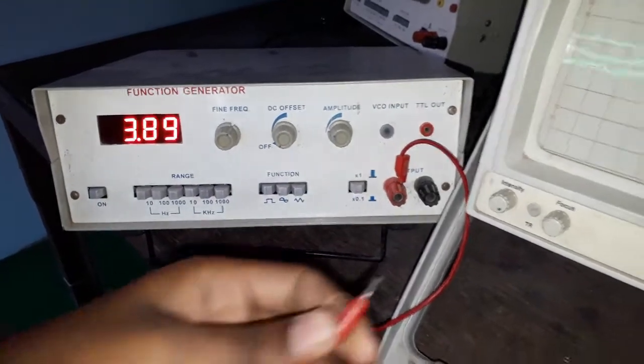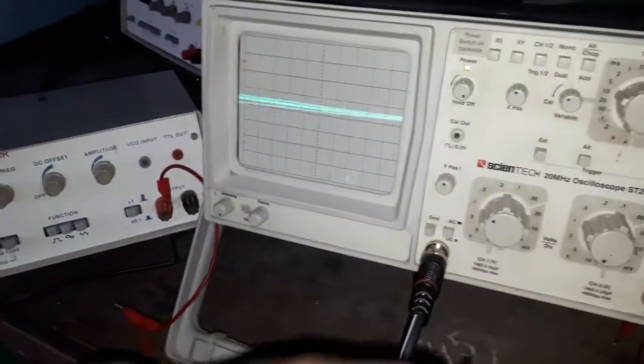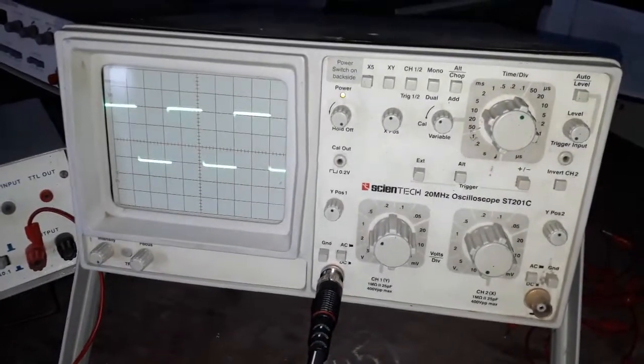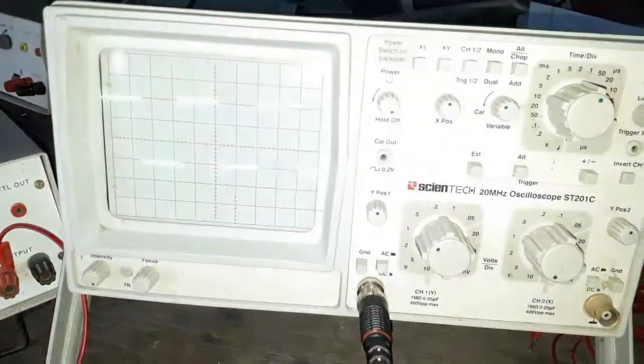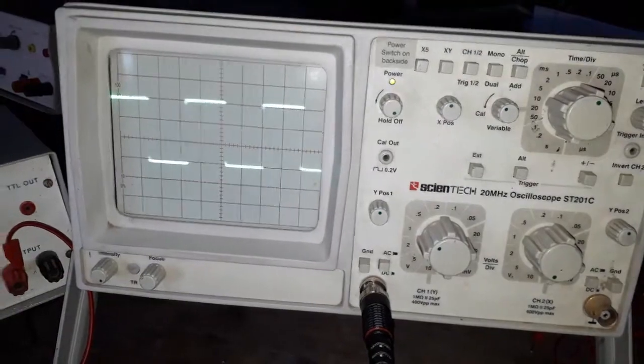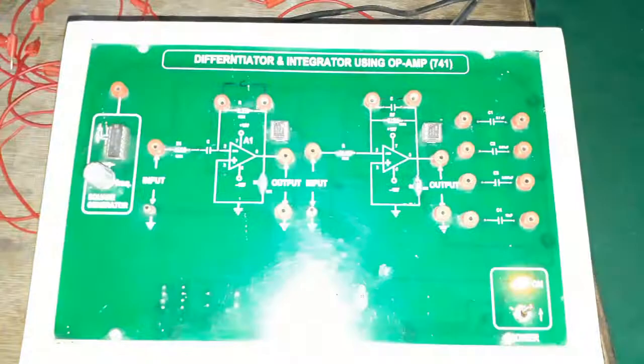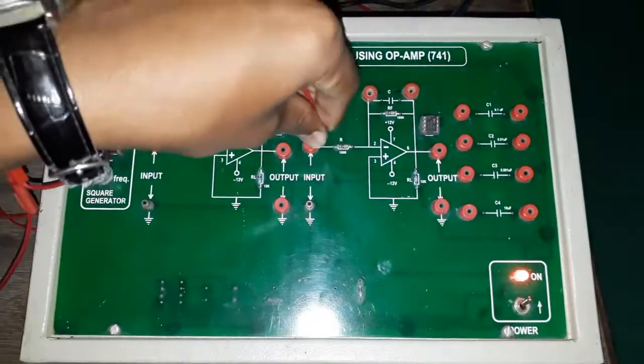This square wave generator - one pin is connected to the input. As I connected this to the square wave generator, the waves which are appearing are in square shapes. Now that input is given to the input integrator.